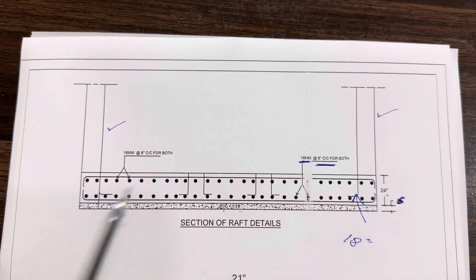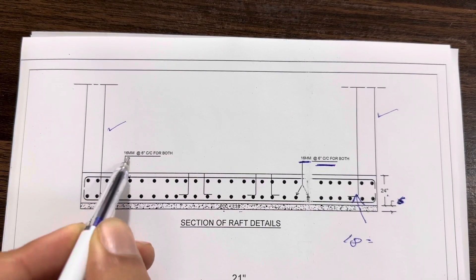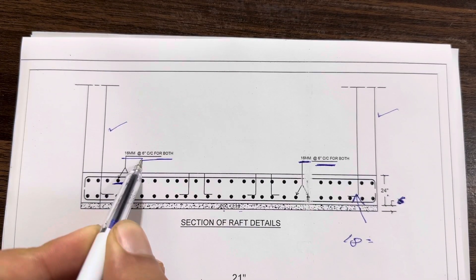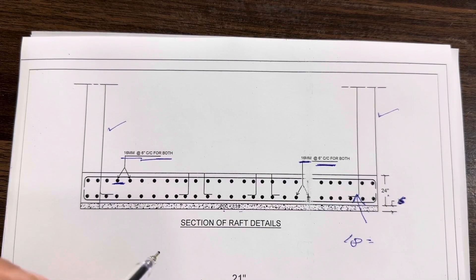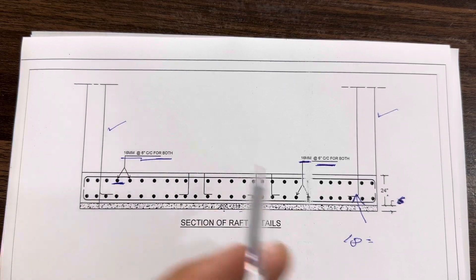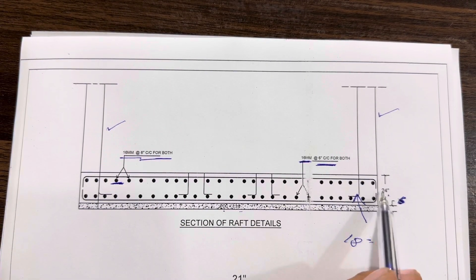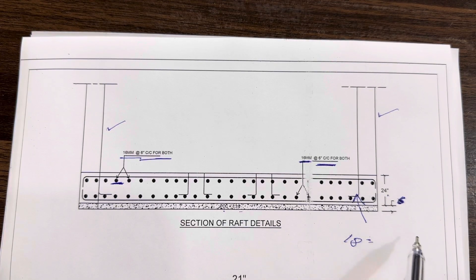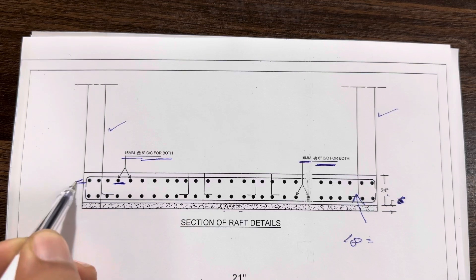In upper portion, the dia is 16 millimeter with the spacing of six by six inches for both ways. These are the steel reinforcement. The bed depth is 24 inches with concrete cover, or without concrete cover the bed depth is 18 inches or 1.5 feet.